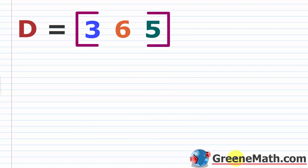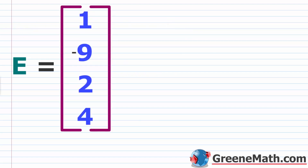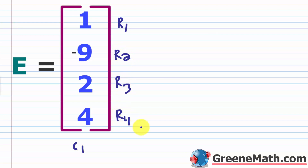You also have a row matrix and a column matrix. A row matrix is a matrix with only one row, and a column matrix is a matrix with only one column. Matrix D is an example of a row matrix — it has only one row but several columns: column 1, column 2, column 3 — so its order is 1 by 3. Matrix E is an example of a column matrix because it has only one column, but it has four rows: row 1, row 2, row 3, and row 4 — so it's a 4 by 1.